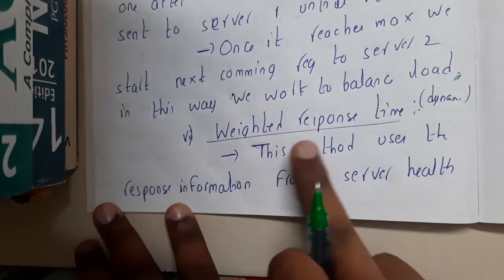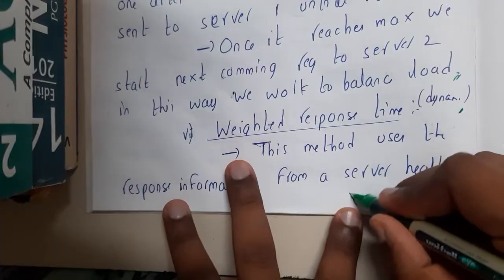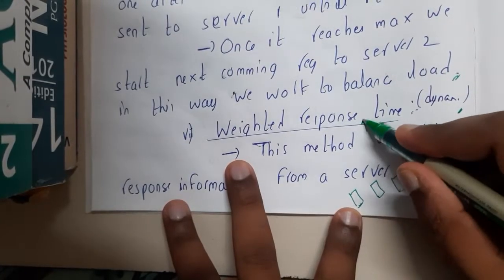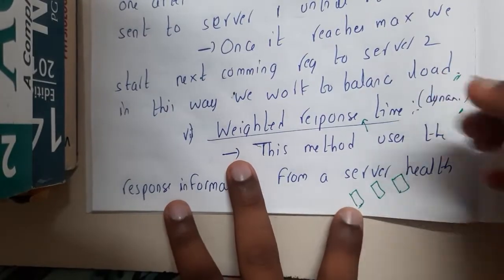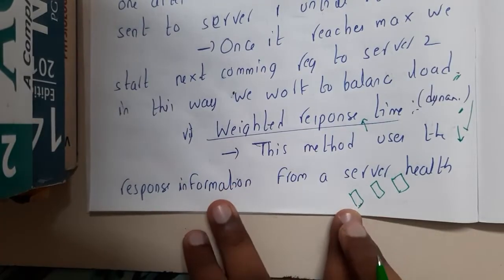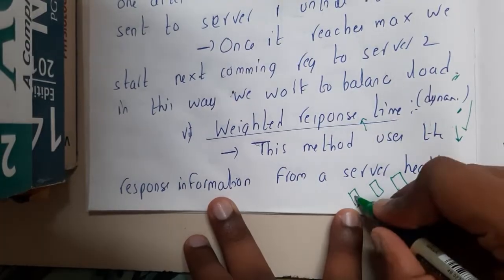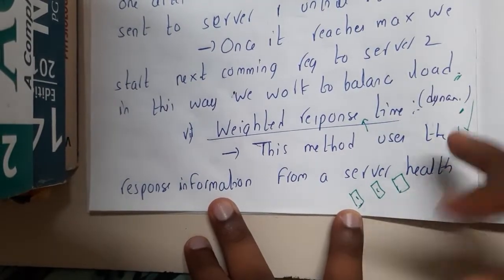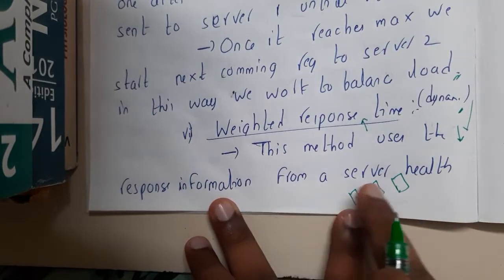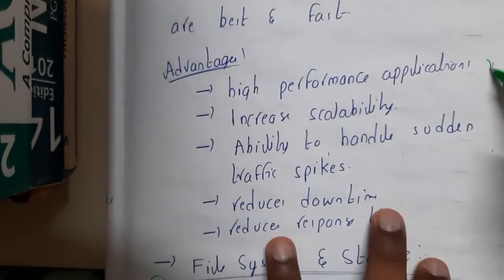The next algorithm is weighted response time, which is also a dynamic method. Instead of weights based on server power, here weights are based on response time. A good response time means the server is fast and efficient. Based on those response times, priorities or weights are assigned, and requests are distributed accordingly. This method uses response information from a server health check.